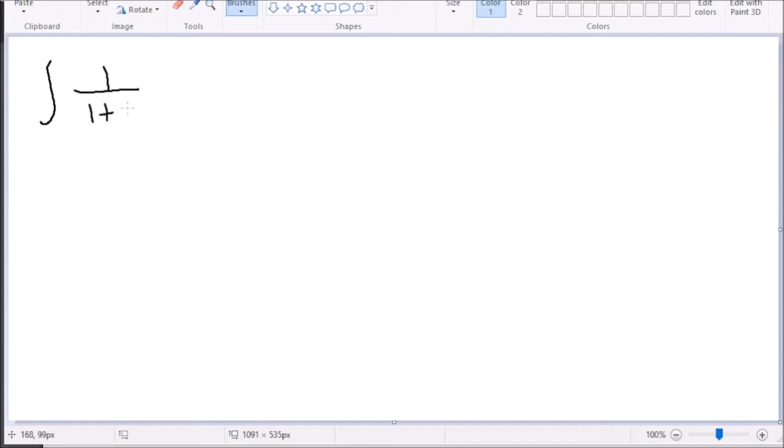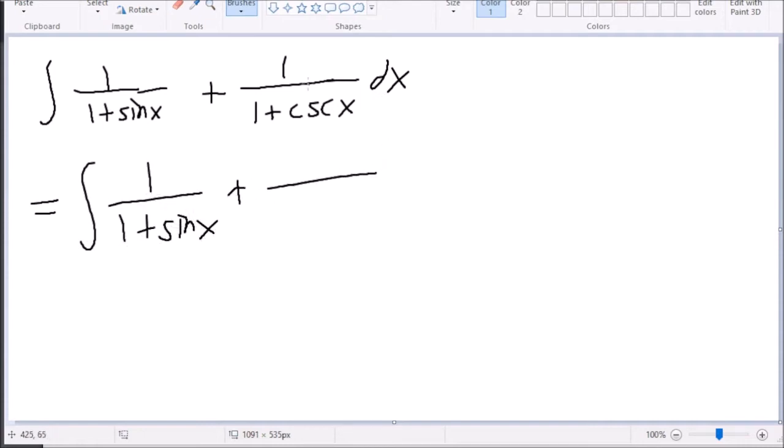So you have one over one plus sine of x. Let's do this first because I want to show you a concept. This is actually the same thing as one over one plus sine of x, but if you multiply by one minus sine of x top and bottom, you get one minus sine of x over cosine squared x.